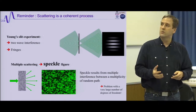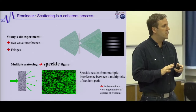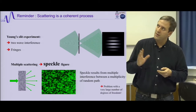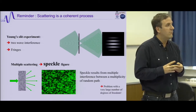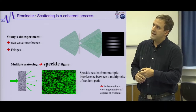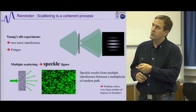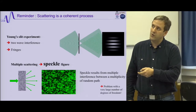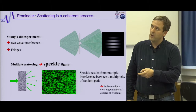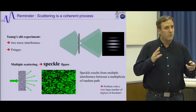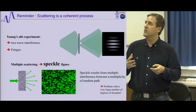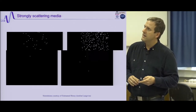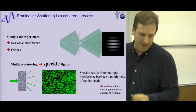I want to jump to the wave picture and an interference picture. Scattering remains a coherent process: just as sending a wave through a screen with two holes gives interference, shining a coherent laser on a scattering sample gives a speckle. This speckle is the result of the random walk and transport inside the scattering medium. I want to show you some examples.